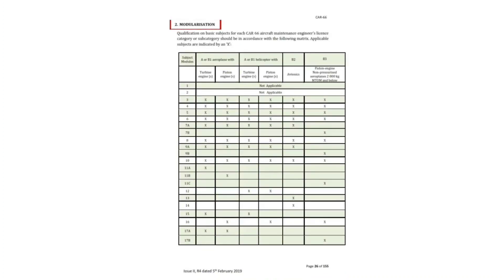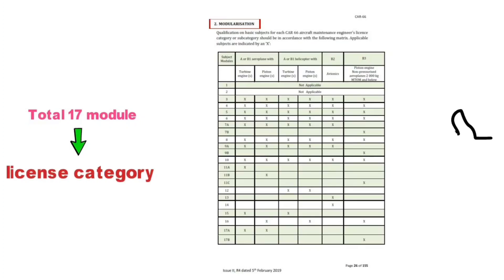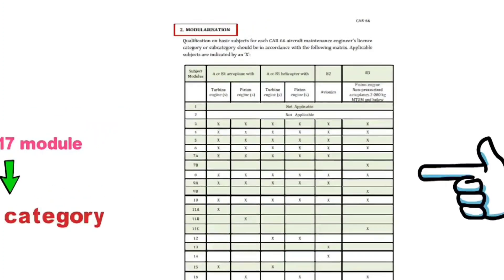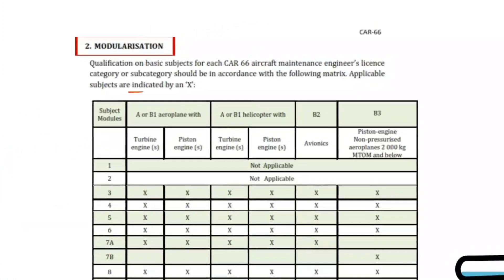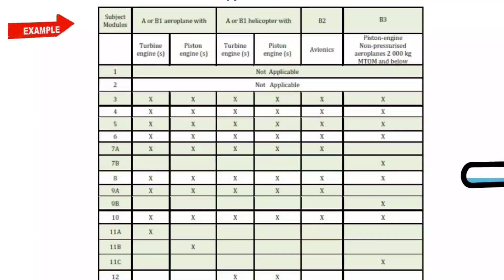Modularization. In total there are 17 modules divided as per the license category you are going for. Looking at this table, the cross mark refers to the applicable module as per the license category you have opted for. Let us understand this with an example.